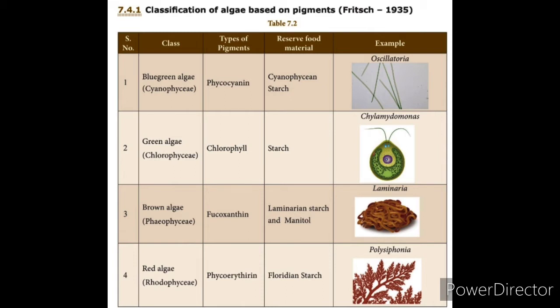The name blue-green algae is denoted by 'cyano' — cyano means blue-green — so the class is Cyanophyceae. Green algae is Chlorophyceae, brown algae is Phaeophyceae, and red algae is Rhodophyceae.